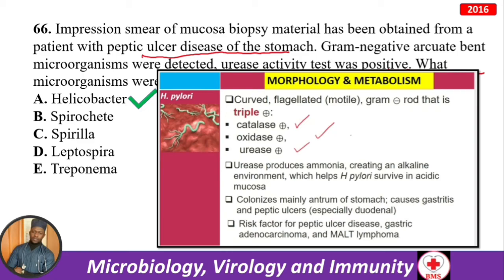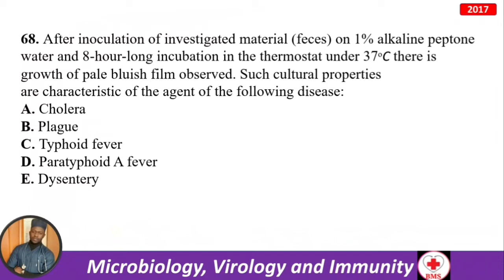After inoculation of the investigated material on one percent peptone water — it's cholera. You don't even need to finish the question. One percent peptone water with alkaline pH (8.5 to 9) is specific for cholera.